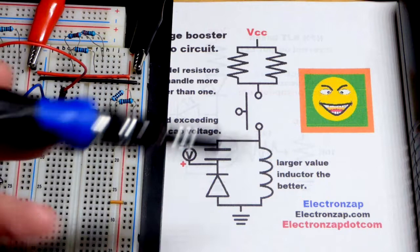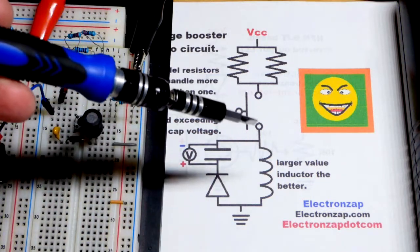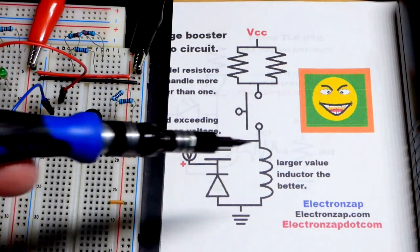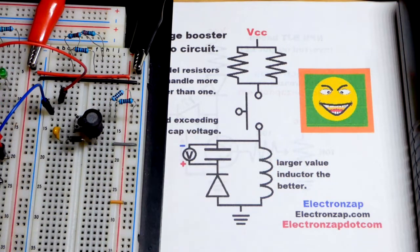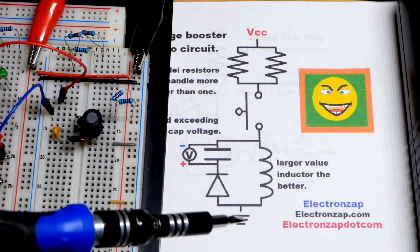So if all we had was a switch, that would make a little spark with the switch. Current will keep flowing and then after that spark the current will die down to nothing. You can see a spark, that's inductive kickback.